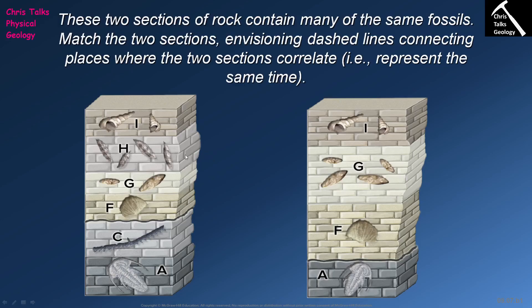Looking at this diagram, we have two sections from two different locations, and we're going to try to correlate between them using fossils. The aim of correlation is to join together layers of rock that have the same age — they don't have to be the same rock type, just the same age. We can see fossil A at the base of both sequences, so those layers formed at the same time. Similarly, fossil F appears in both locations, so those layers are also the same age.